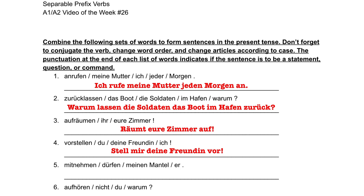In the next sentence, we have the verb mitnehmen. Normally we would put mit at the end of the sentence and conjugate nehmen. But there's also a modal auxiliary in here — dürfen, meaning to be allowed to. With a modal auxiliary as an additional verb, mitnehmen goes to the end of the sentence as an infinitive. So our full sentence becomes: Er darf meinen Mantel nicht mitnehmen — he is not allowed to take my coat with him.